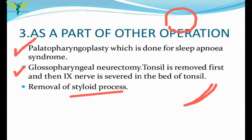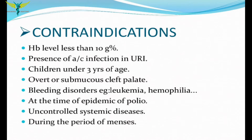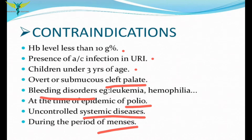Tonsillectomy is also done as part of removal of the styloid process in cases of Eagle syndrome, where the styloid process is larger than normal. Contraindications include: hemoglobin level less than 10 gram percent, presence of acute upper respiratory tract infection, children under the age of three years, cases of cleft palate (overt or submucous), and bleeding disorders like leukemia and hemophilia.